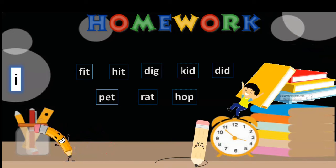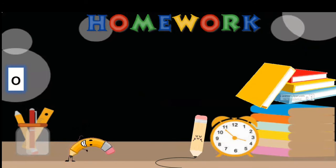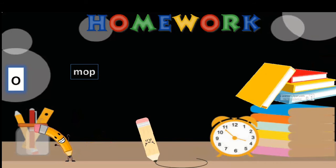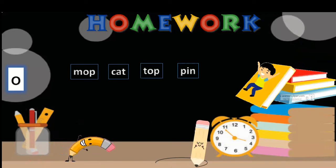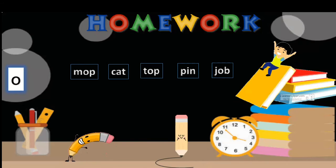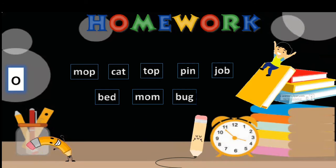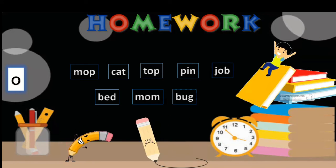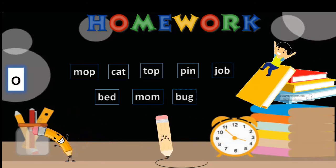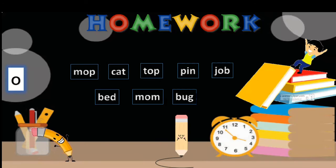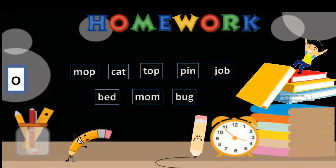So now O, next one word O. So what is O here? We will see. M-O-P mop, C-A-T cat, T-O-P top, P-I-N pin, J-O-B job, B-U-G bug, M-O-M mom, P-E-T pet. Now you have to find out who belongs to the family of vowel O. Is it mop? Is it cat? Top? Pin? Job? Pet? Mom? Or bug? So you have to write it on. Okay, moving further.